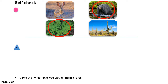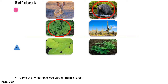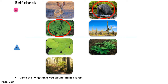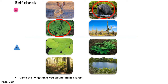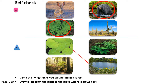Moving on to question number two, we have a picture of lily pads, a picture of ferns, and a picture of a pond. Our question is to draw a line from the plant to the place where it grows best. Lily pads grow in ponds. Ferns grow in forests. Well done, everybody.